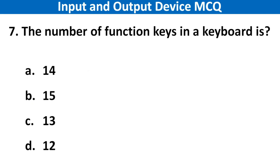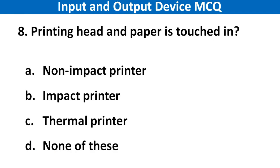Next question: The number of function keys in a keyboard is. Right answer is option D: 12. Next question: Printing head and paper is touched in which type of printer? Right answer is option B: Impact printer.